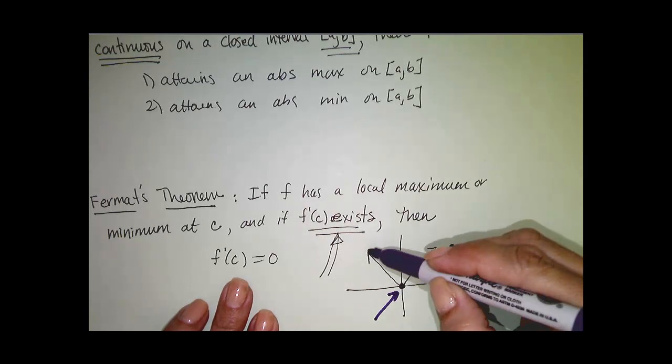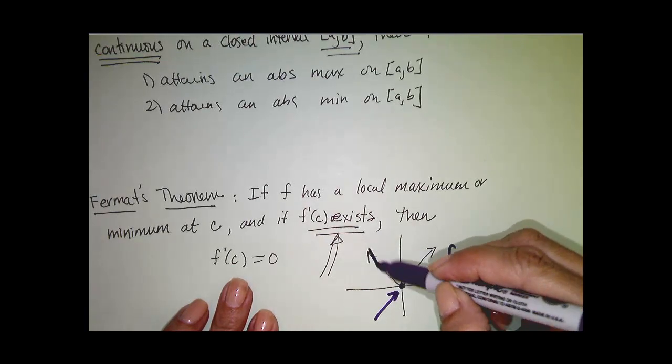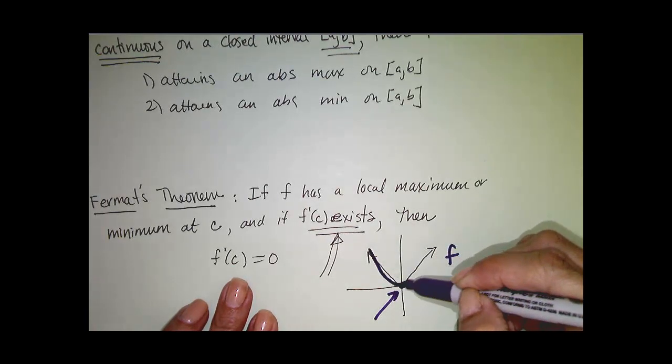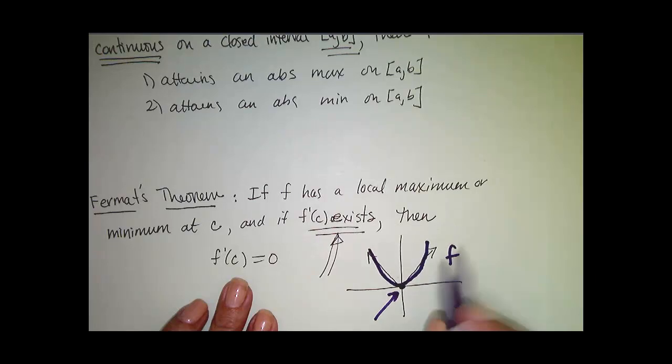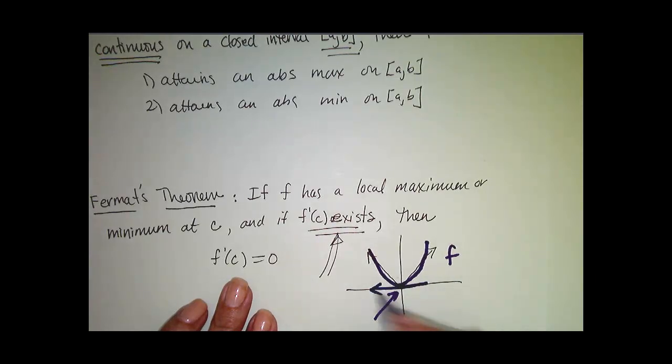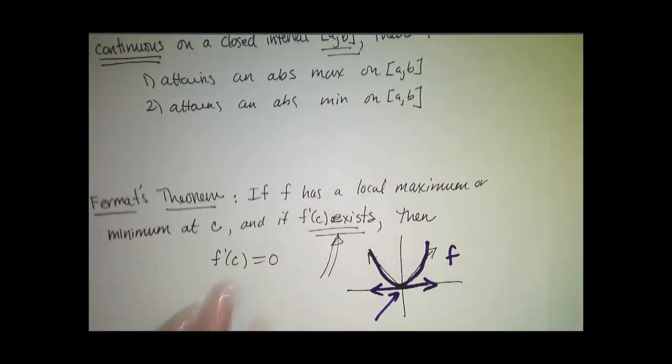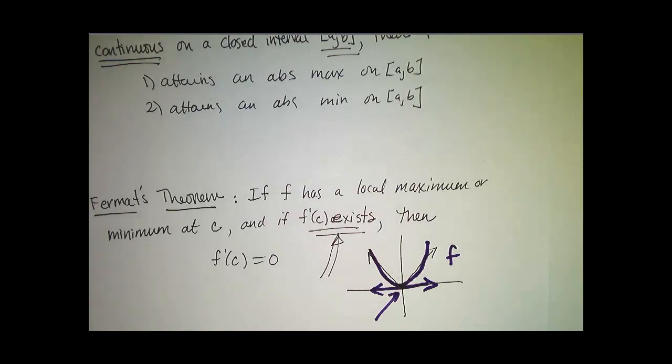Only if the derivative exists. So let's just make it curvy — now the derivative exists, and now I see the tangent line equals 0.